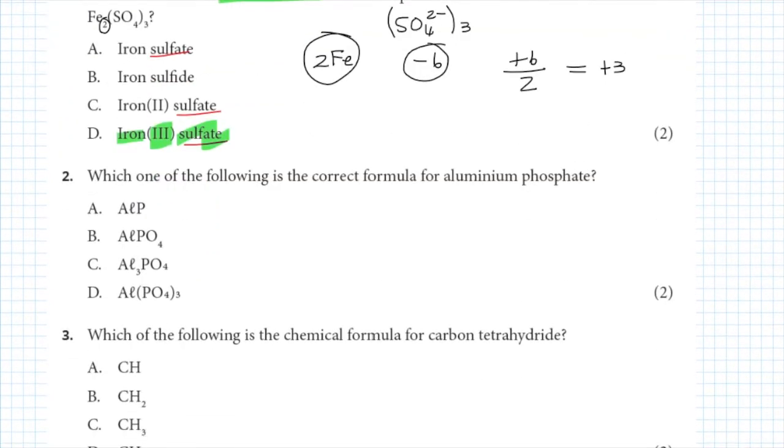Question 2 asks: which one of the following is the correct formula for aluminum phosphate? Aluminum is Al. Phosphate is a polyatomic ion, PO₄³⁻, with a charge of -3.